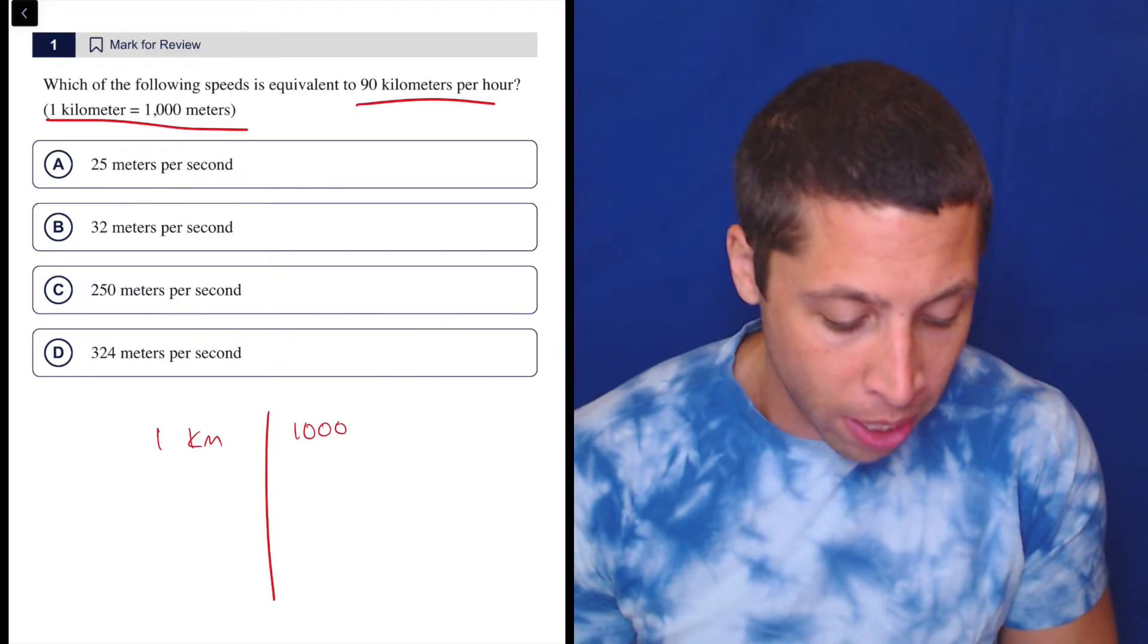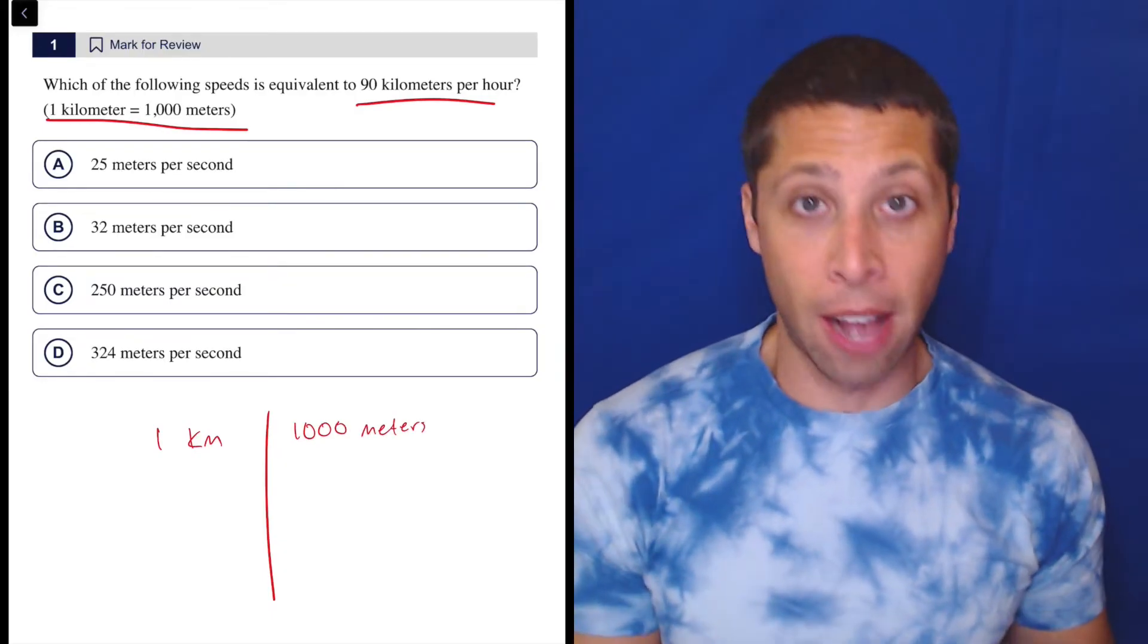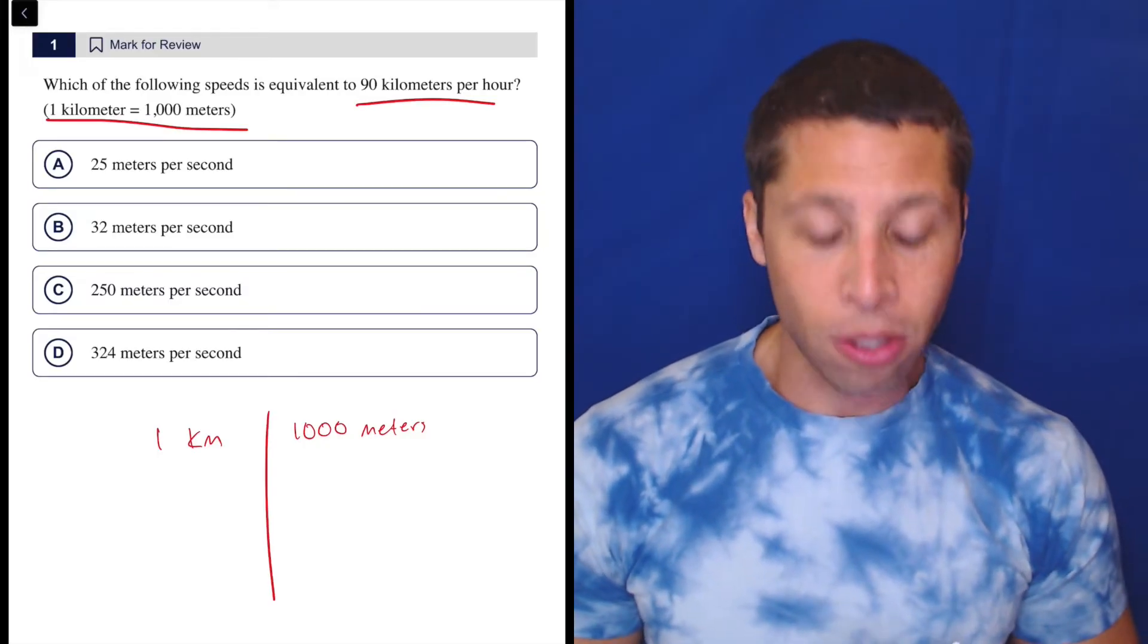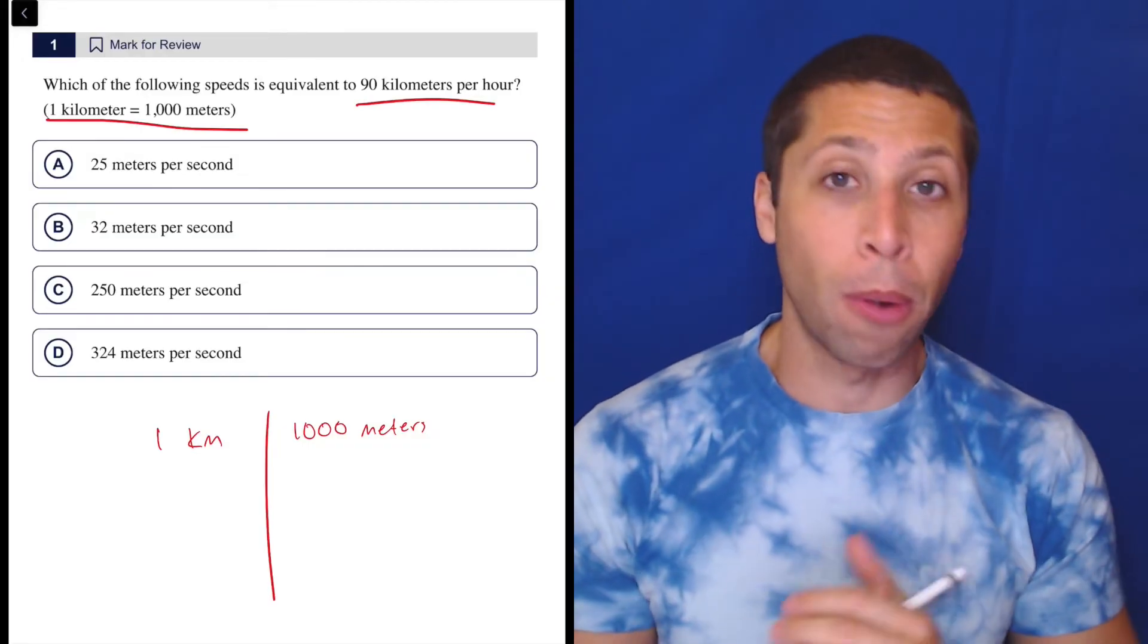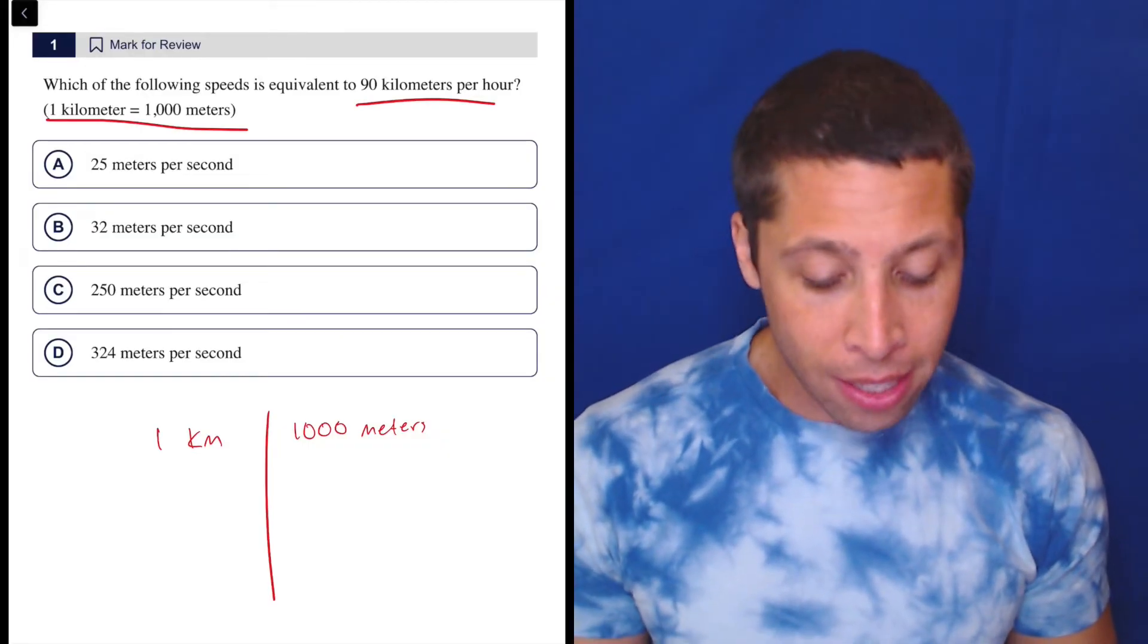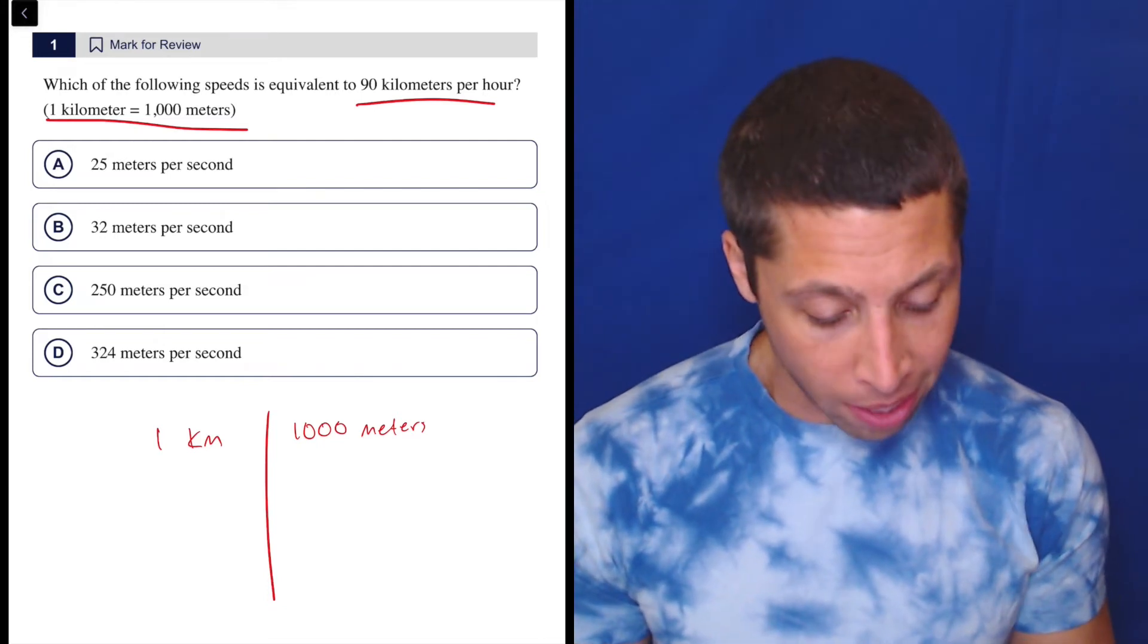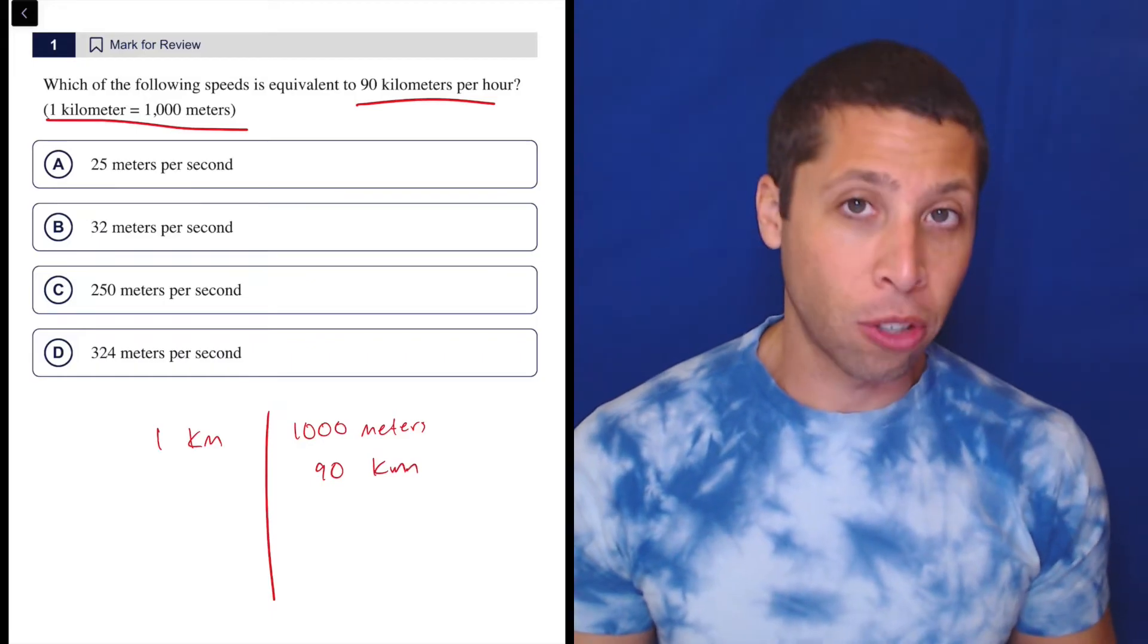And it doesn't really matter how you do it. Just make sure that you write the units. So one kilometer is 1,000 meters. One goes on the left, one goes on the right. Now, the next thing to do is to try to match the unit so that there's the same unit on both sides, and that allows us to cancel it. So 90 kilometers per hour—well, we could just say then, all right, 90 kilometers has to go here because we need kilometers on both sides.